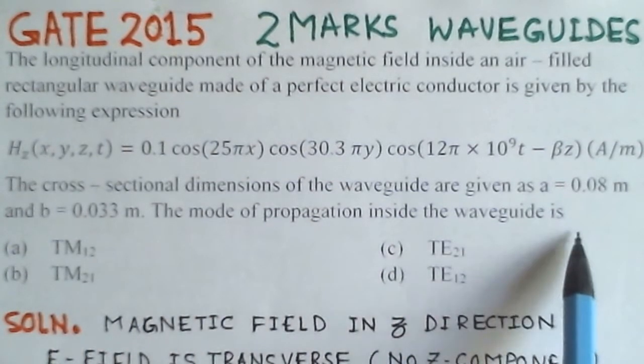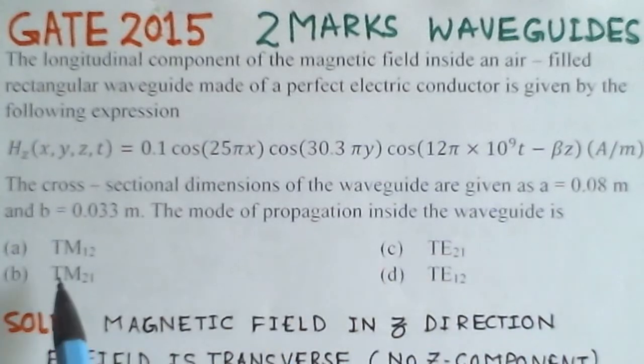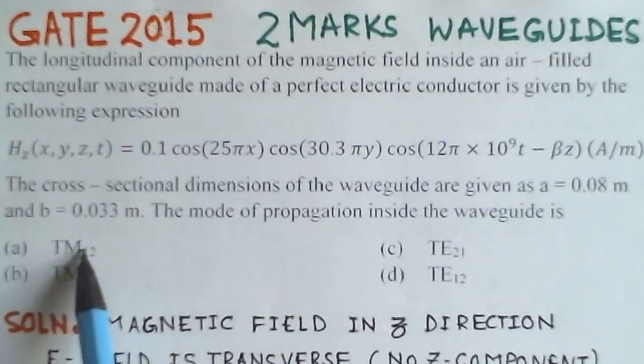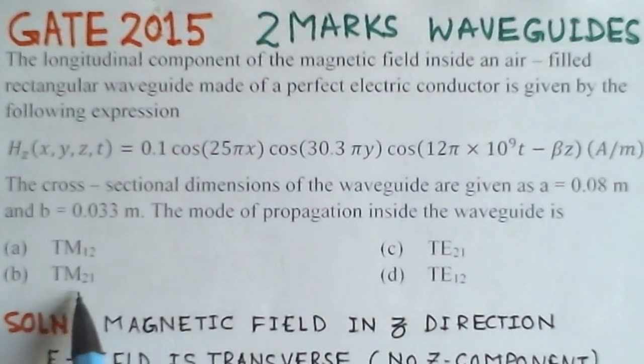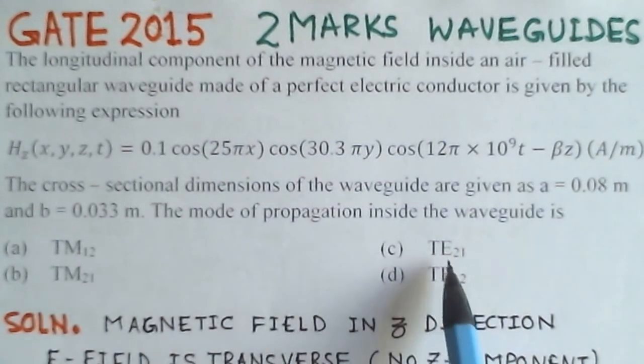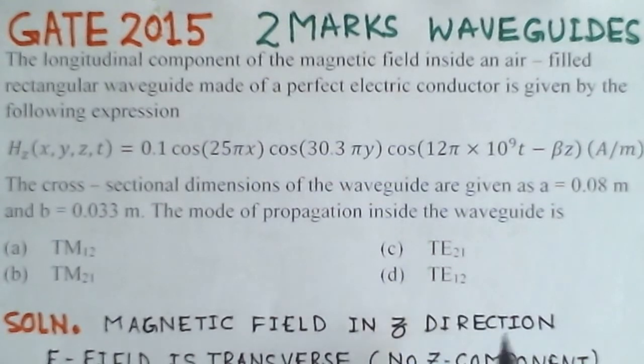We have to determine the mode of propagation inside the waveguide. The options are: A is TM12, B is TM21, C is TE21, or D is TE12.